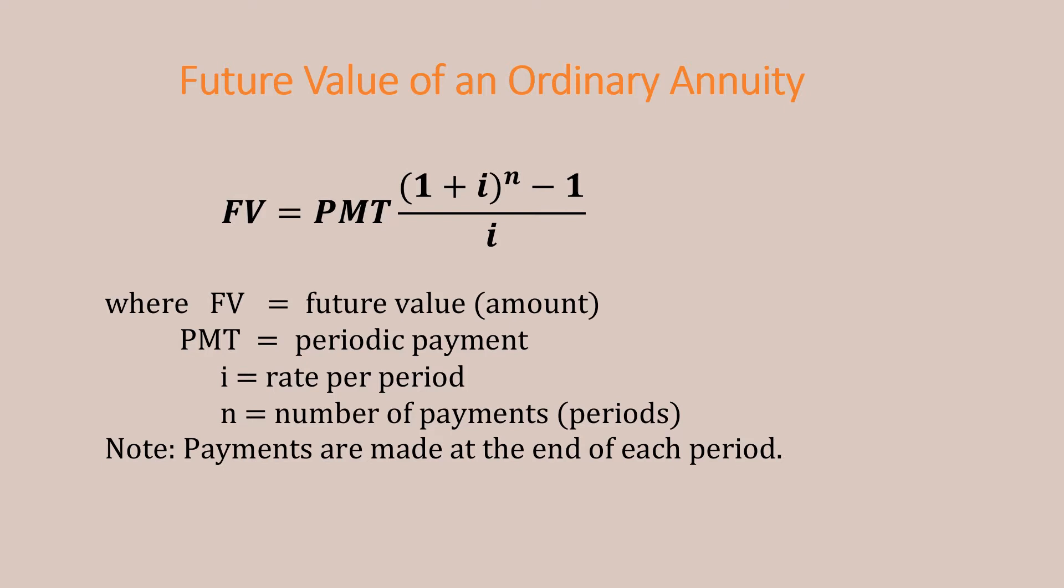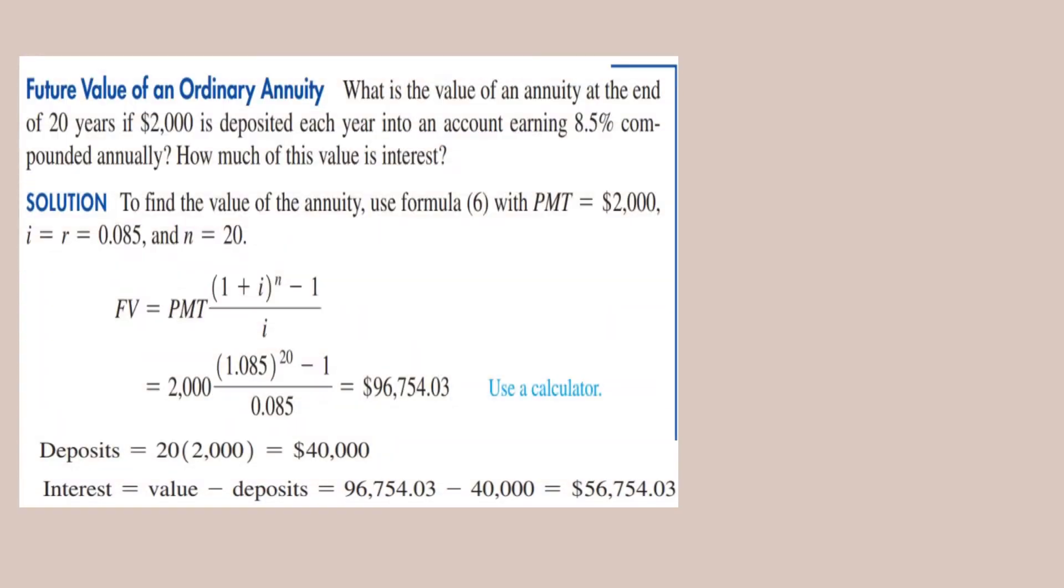Let's find the future value of an ordinary annuity. The question is: What is the value of an annuity at the end of 20 years if $2,000 is deposited each year into an account earning 8.5% compounded annually? How much of this value is interest?